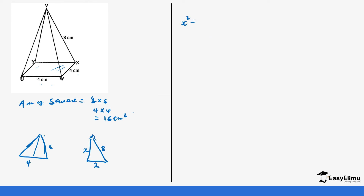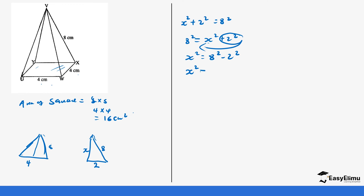We can do that using Pythagoras' theorem: x² + 2² = 8², or rearranging, x² = 8² − 2², which is the same as x² = 64 − 4. Taking the square root of both sides to remove the square gives us x = √60.